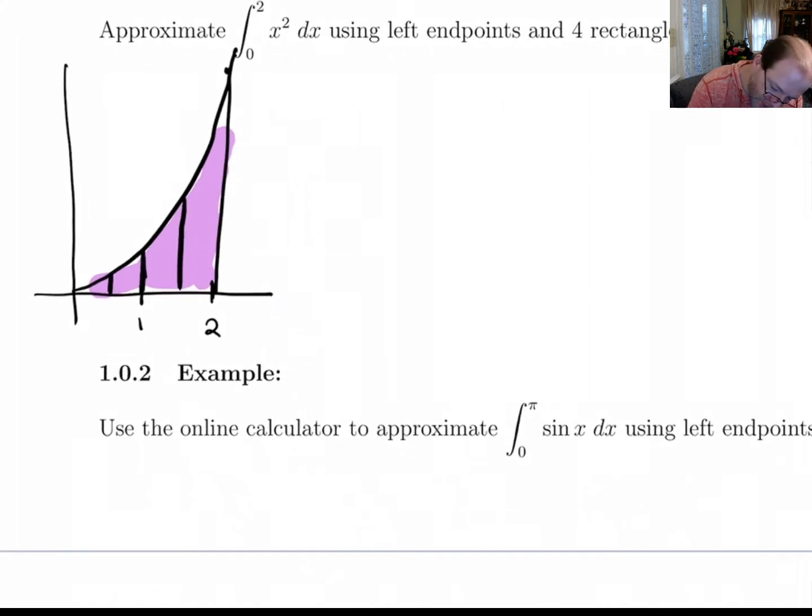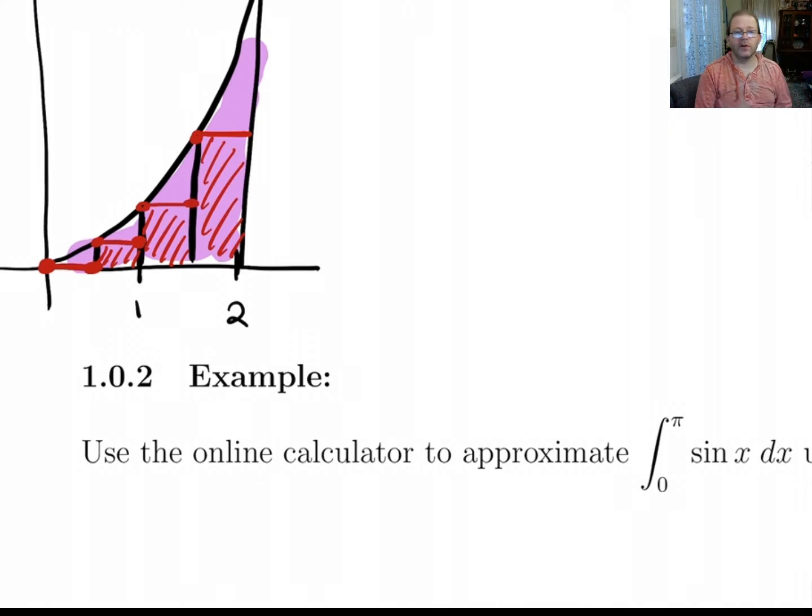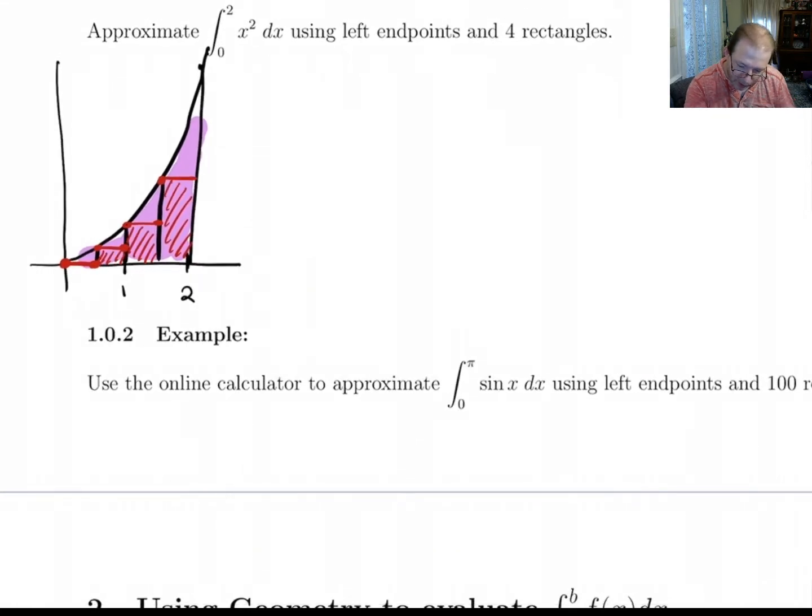For the left endpoints, that means for this first rectangle is going to go from here to here. The next one's going to be here, and here, and here. So our approximation is going to be these four rectangle areas. It's not going to be a very good approximation because it's obviously leaving out a good bit of the area underneath the curve. But let's calculate.